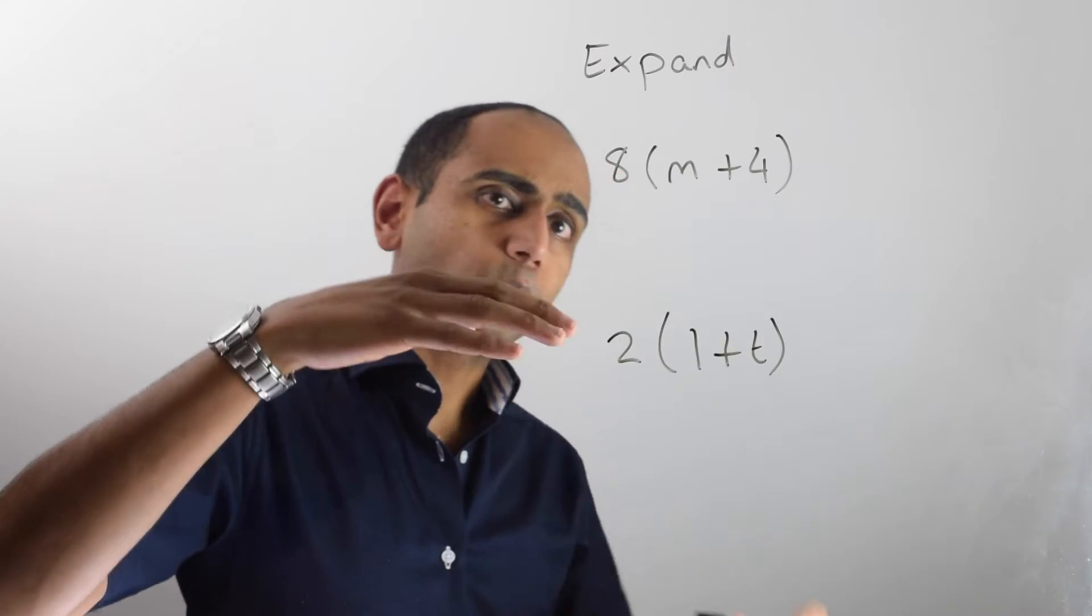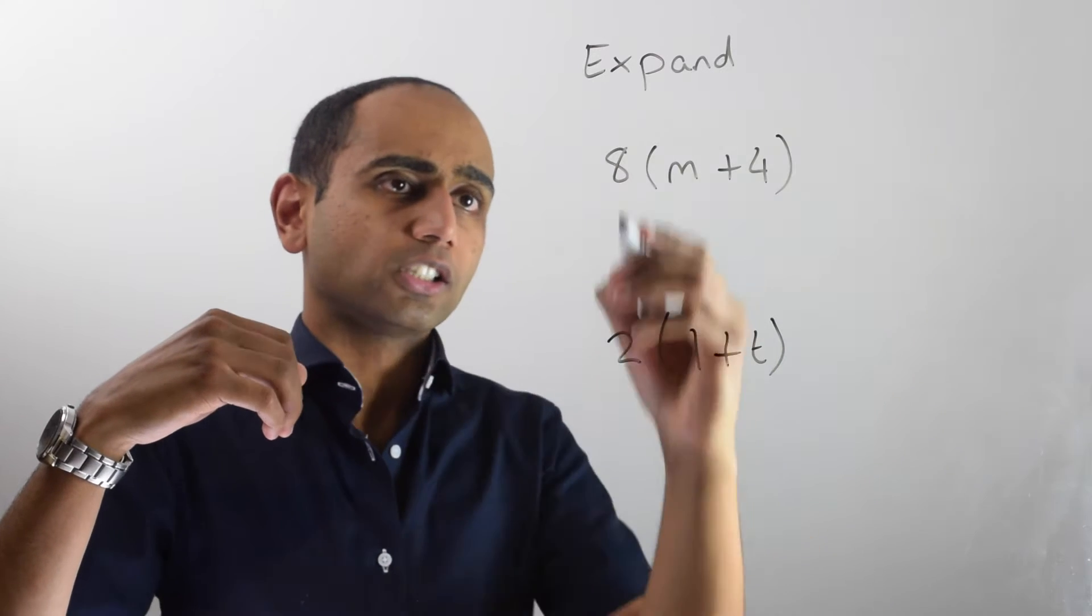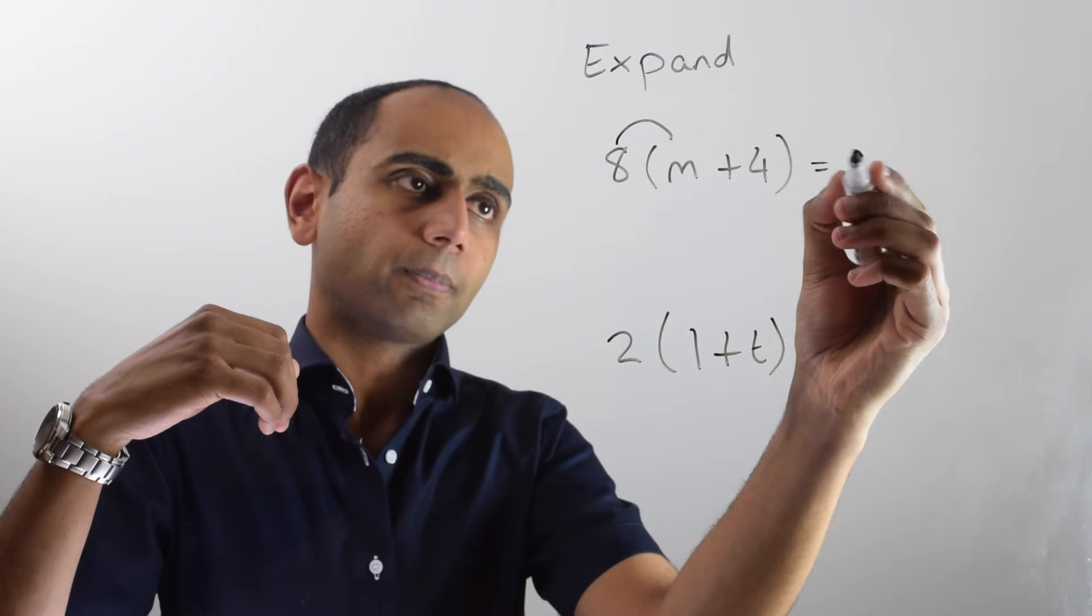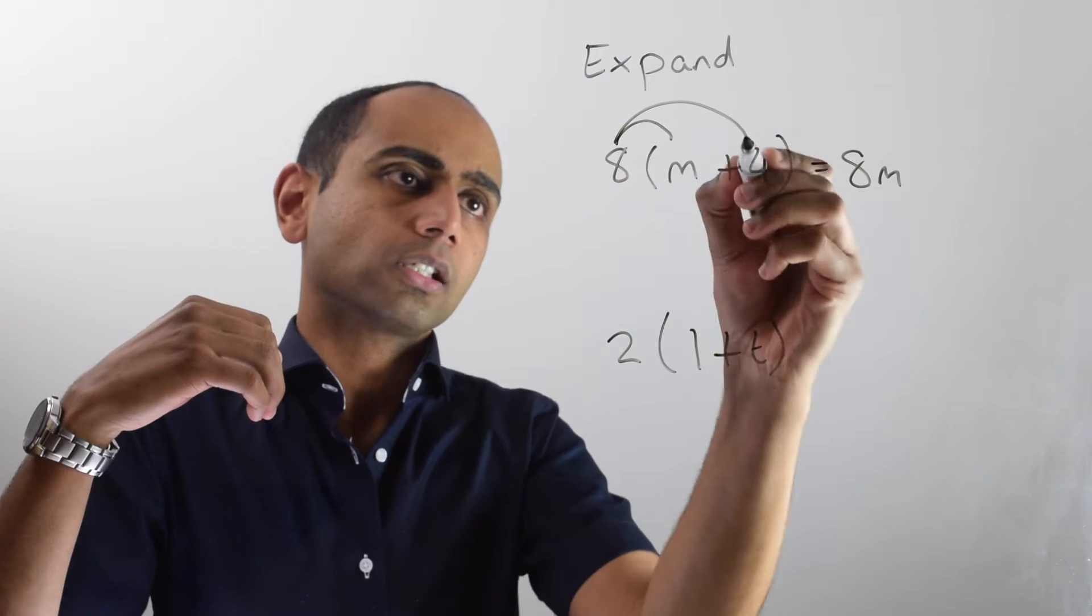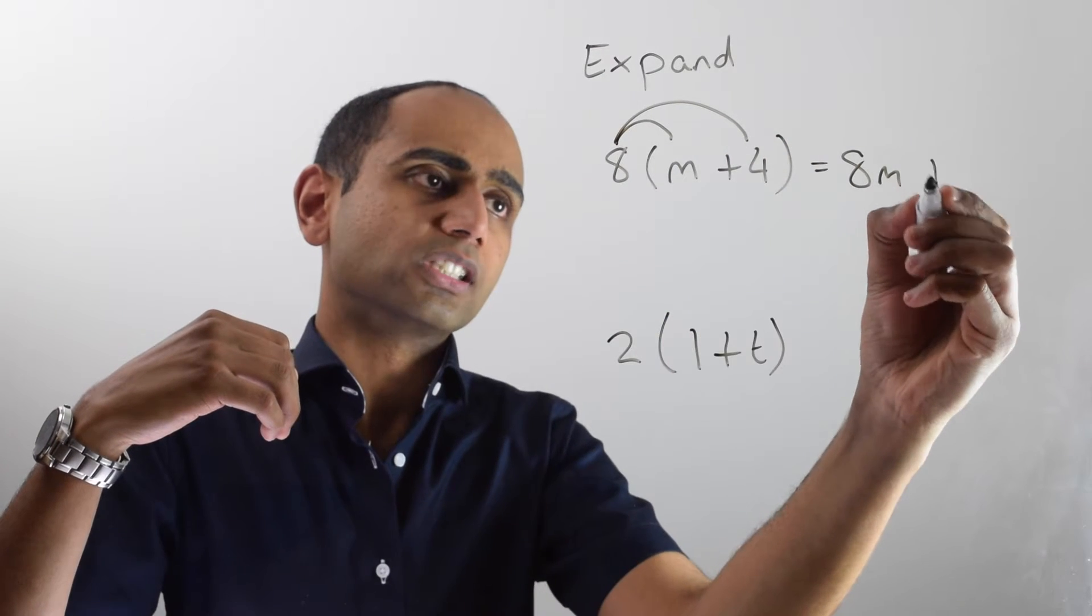In this example I've got eight lots of (m + 4). So that's going to give me 8m plus eight lots of 4, which is 32.